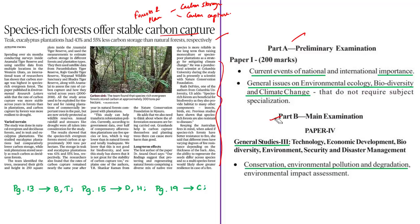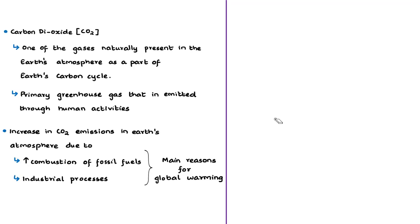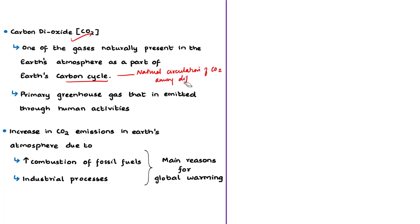Carbon dioxide is one of the gases naturally present in the earth's atmosphere as part of the carbon cycle. The carbon cycle refers to the natural circulation of carbon dioxide or carbon among the different spheres of the earth — atmosphere, hydrosphere, lithosphere, and biosphere. Carbon dioxide is the primary greenhouse gas emitted through different human activities.